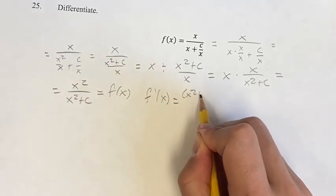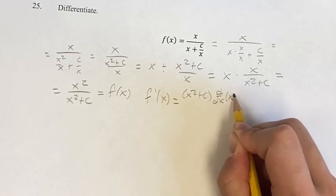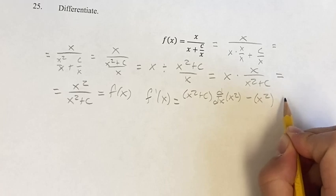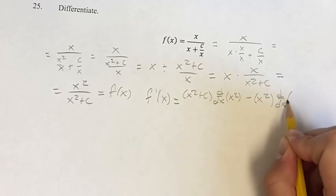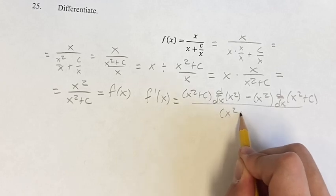we have the denominator times the derivative of the numerator minus the numerator times the derivative of the denominator. This is all over the denominator squared.